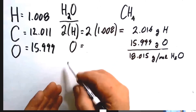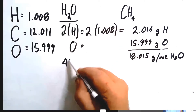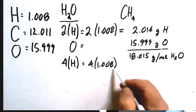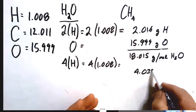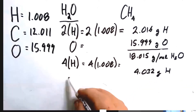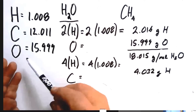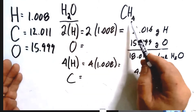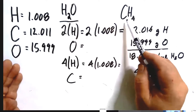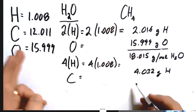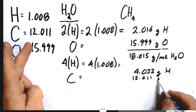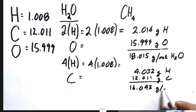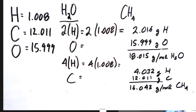Now I'll do methane. We have one carbon and four hydrogens. For the four hydrogens: 4 × 1.008 = 4.032 grams of hydrogen. For carbon, there's just one — if there's no subscript it's just one — so that's 12.011 grams of carbon. Note the four in CH₄ only applies to the hydrogen; there's just one carbon. Adding them together: 4.032 + 12.011 = 16.043 grams per mole of methane, CH₄.